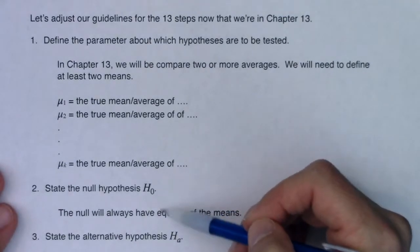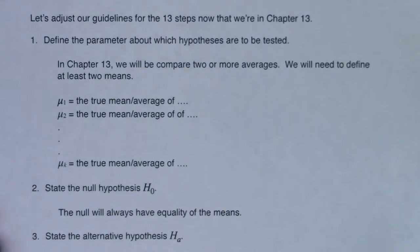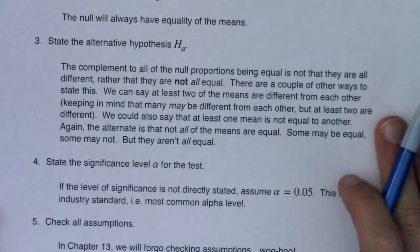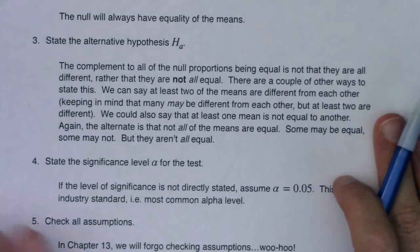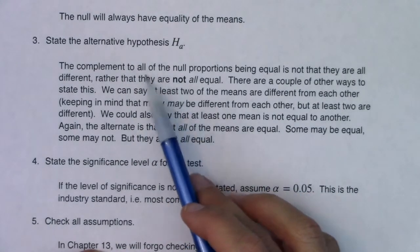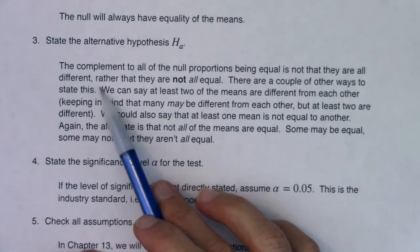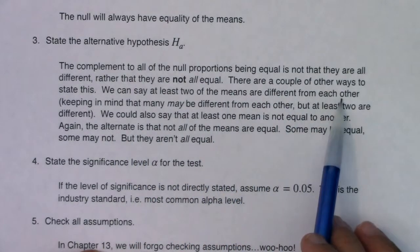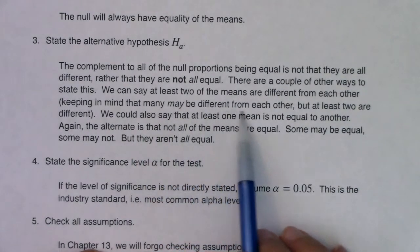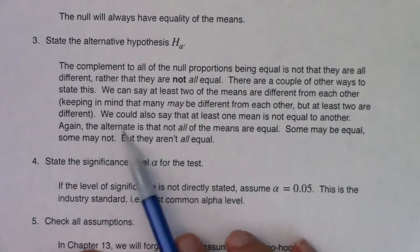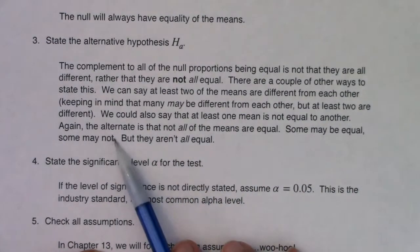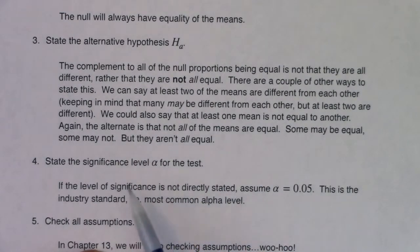The null hypothesis will always be equality of the means, so you have a bunch of equal signs. The alternate is going to be that at least two of the means are different from each other. And that might be a little bit hard to wrap your brain around at first. Because the complement to all of the null proportions being equal is not that they are all different, rather that they are not all equal. There are a couple of other ways to state this. We can say that at least two of the means are different from each other, keeping in mind that many may be different from each other, but at least two are different. We could also say that at least one mean is not equal to another. Again, the alternate is that not all of the means are equal. Some may be equal, some may not, but they aren't all equal.